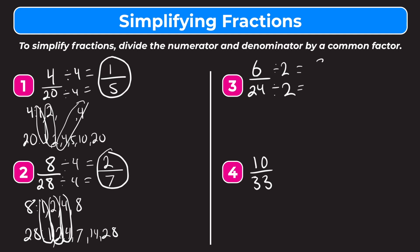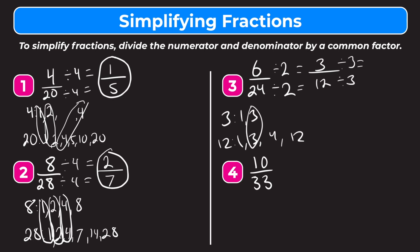6 divided by 2 equals 3, and 24 divided by 2 equals 12, giving us 3 twelfths. But is that the simplest form? Thinking about 3 and 12 — the factors of 3 are 1 and 3, and the factors of 12 include 1, 12, 3, and 4. They still share a common factor of 3, so we divide both by 3. 3 divided by 3 equals 1, and 12 divided by 3 equals 4. Now 1 and 4 only share 1 as a common factor, so that is the simplest form and we're done.